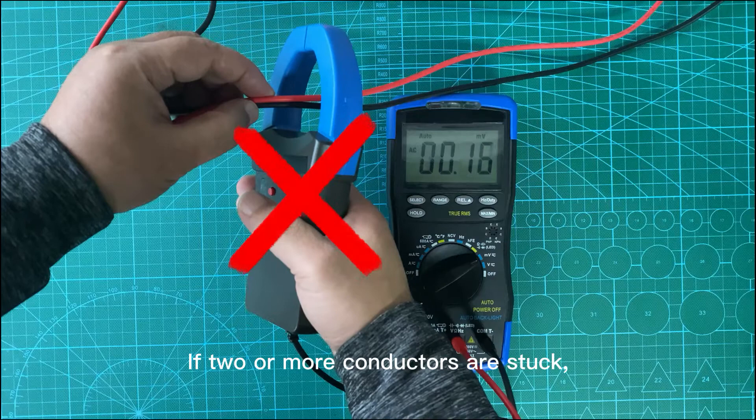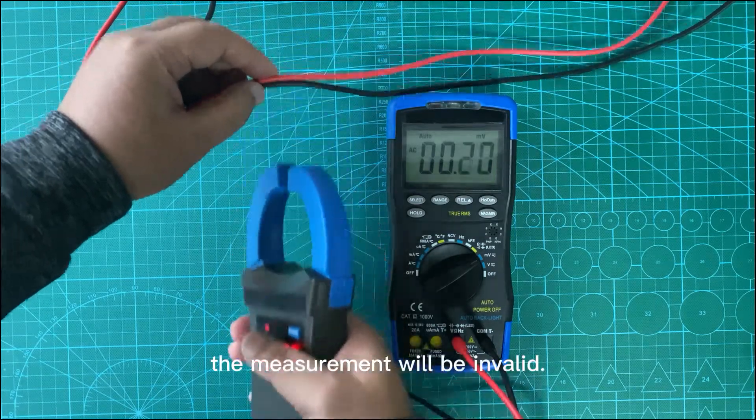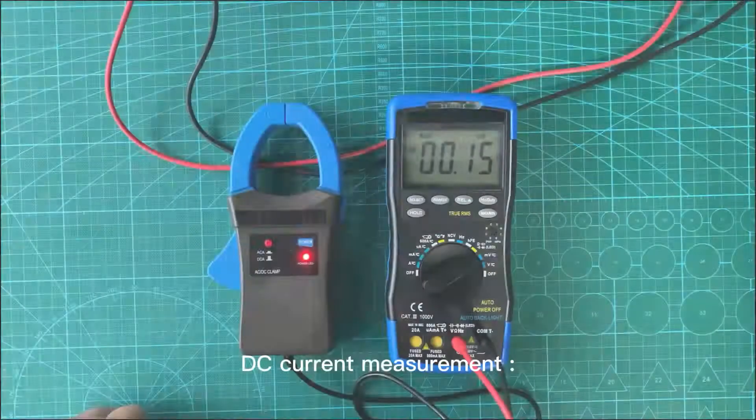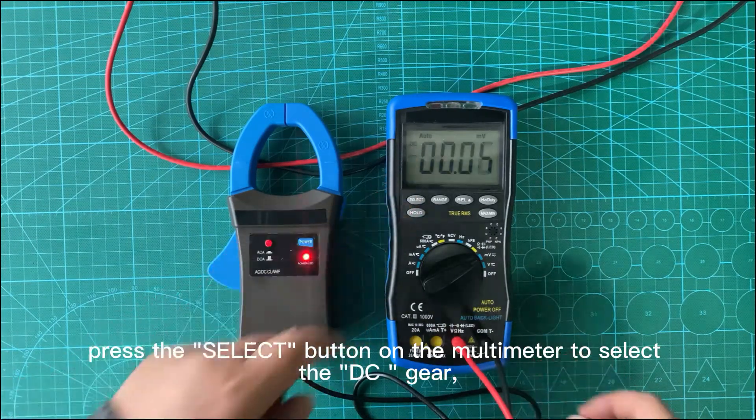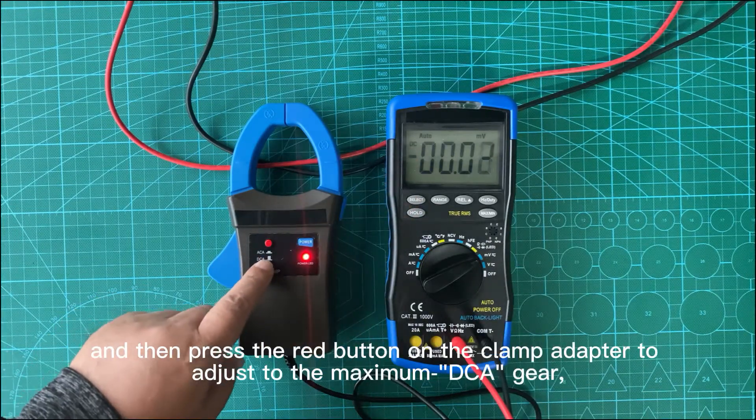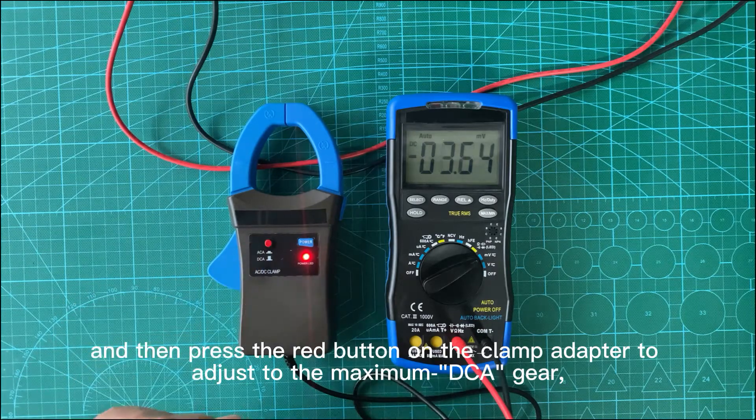If two or more conductors are stuck, the measurement will be invalid. DC current measurement: press the select button on the multimeter to select the DC gear, and then press the red button on the clamp adapter to adjust to the maximum DCA gear.